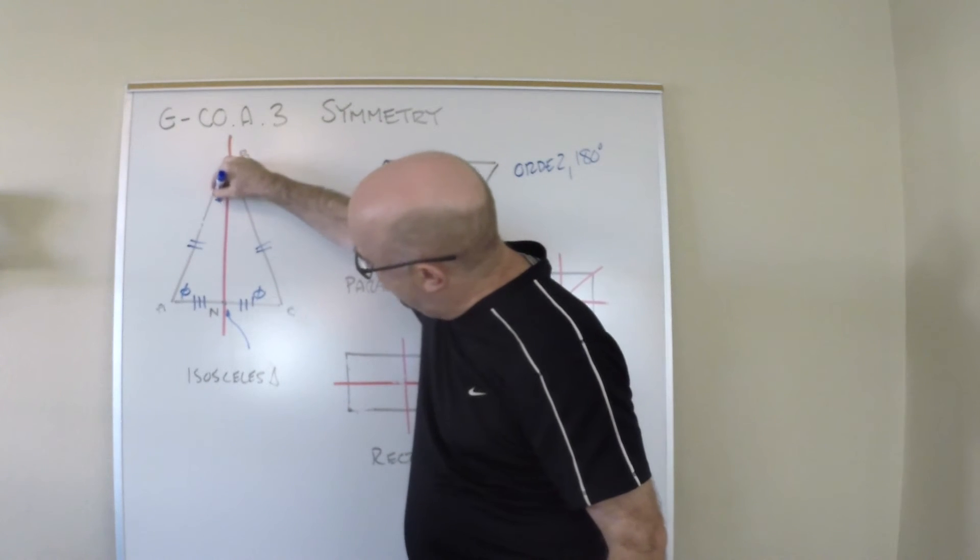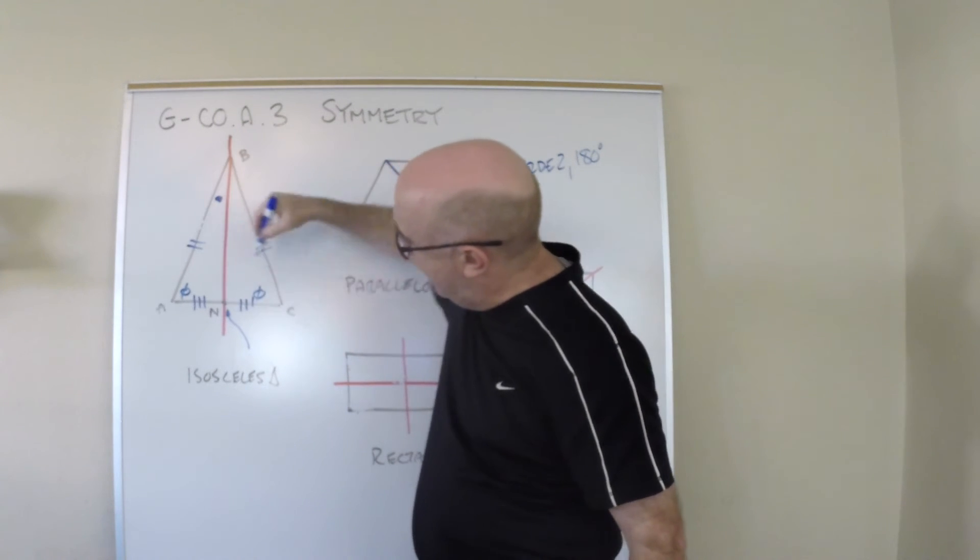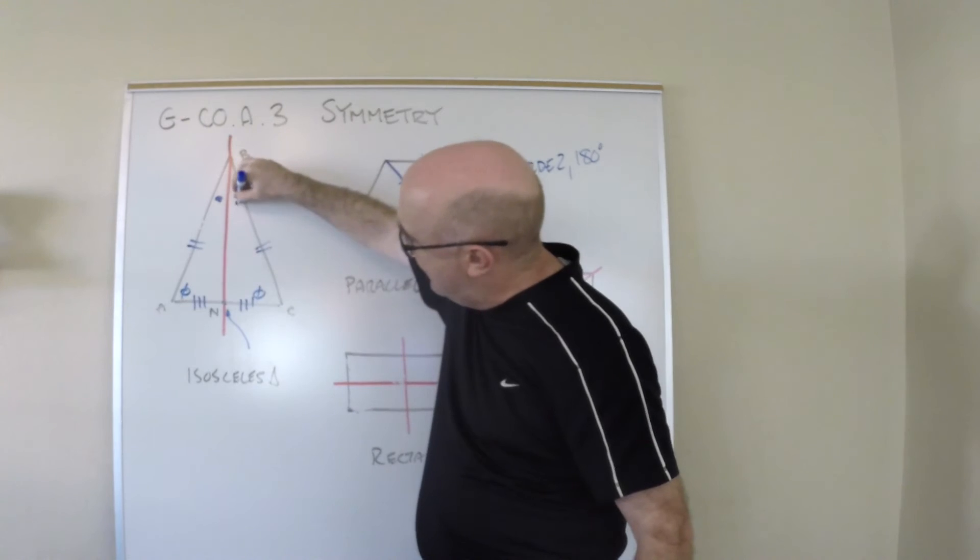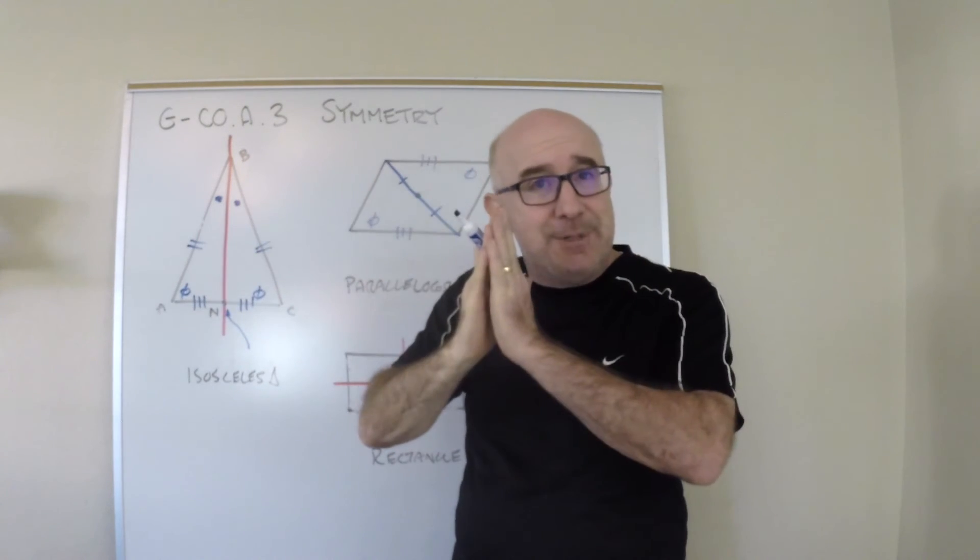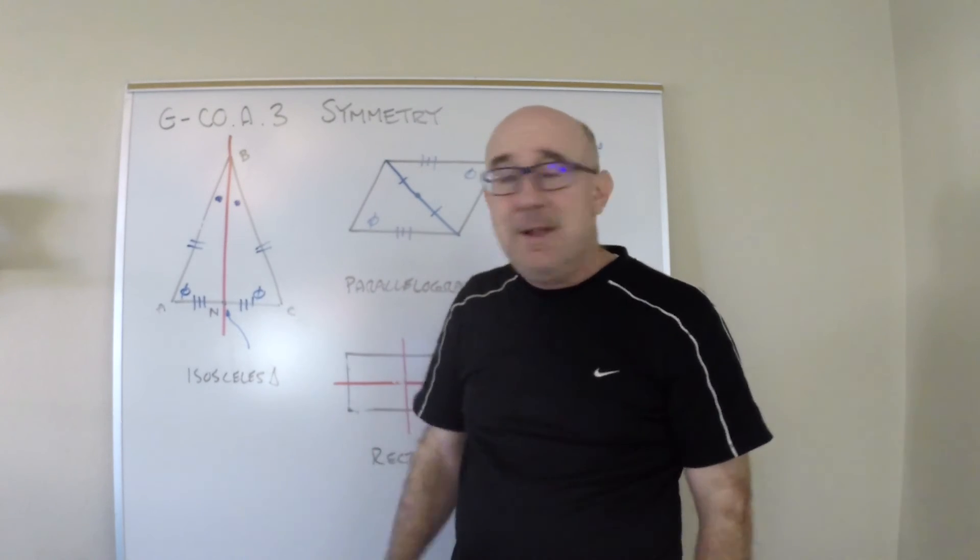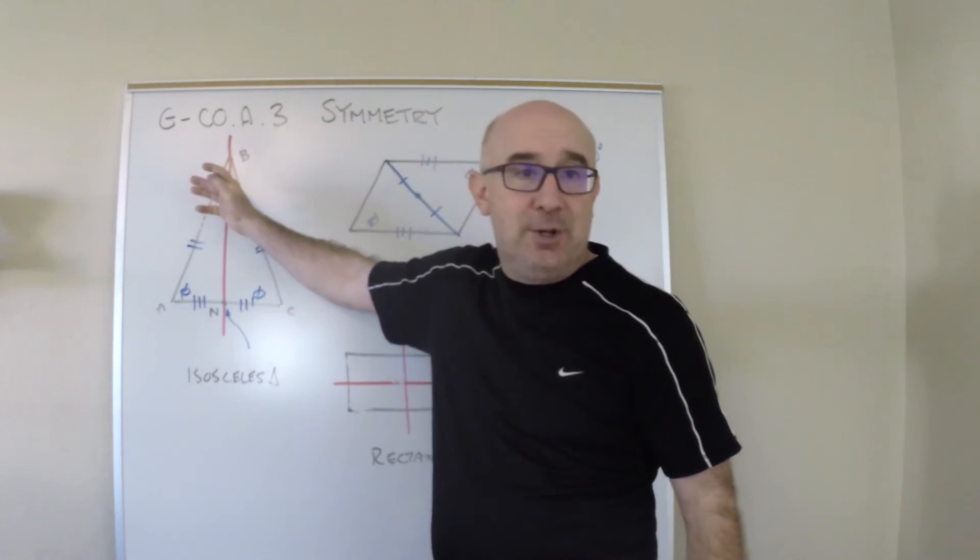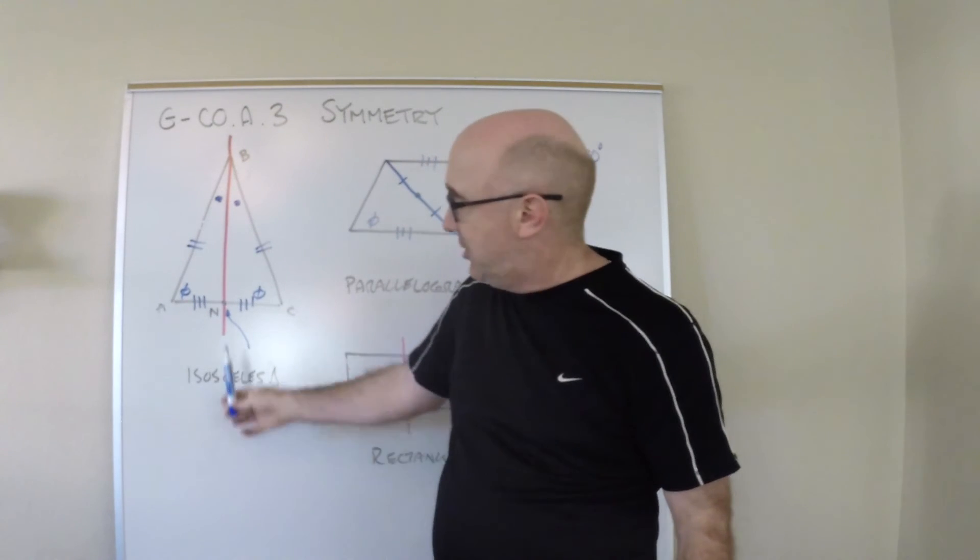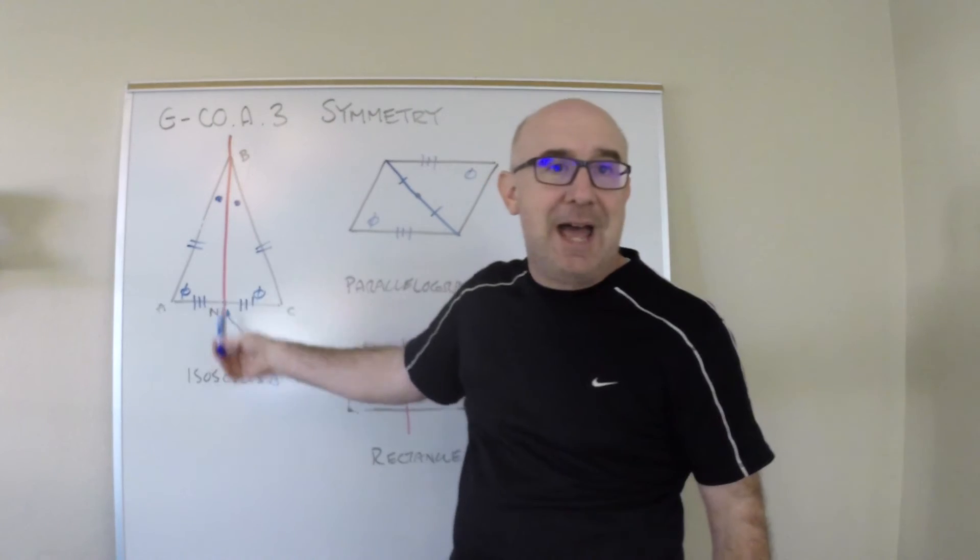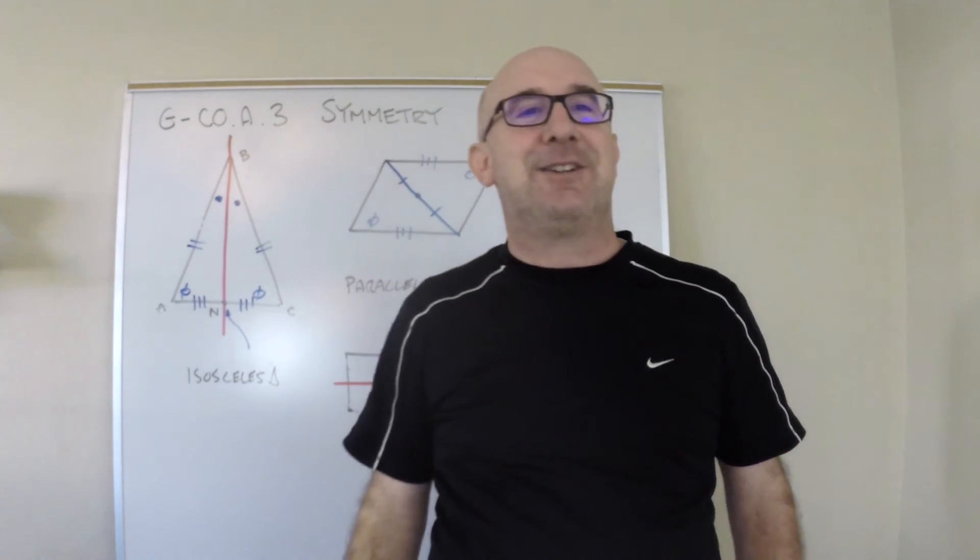They told me that this angle here, ABN and CBN, had to be equal because of the mapping, the symmetry onto itself. They told me that that was an angle bisector of angle ABC. They eventually told me more down here and then established that that was a perpendicular bisector.